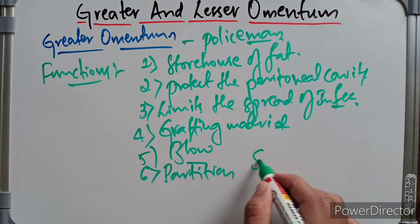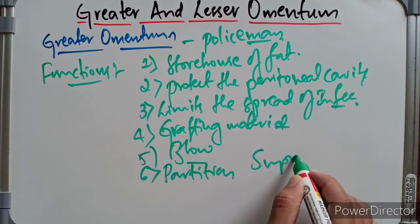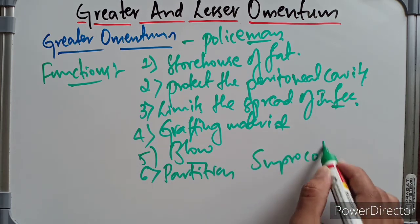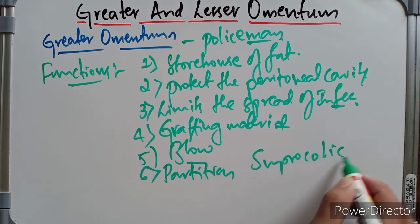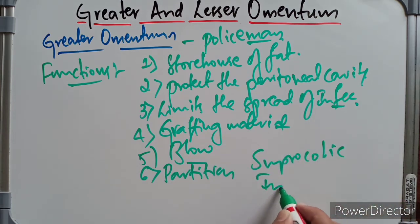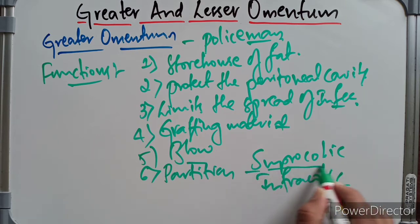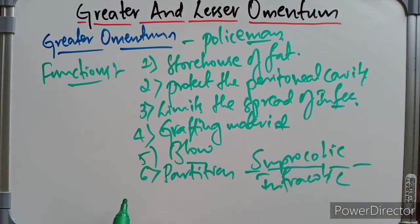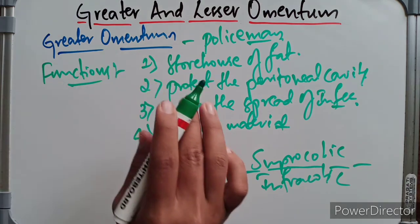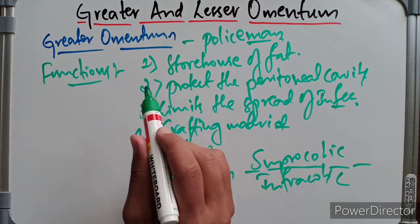Additionally, the greater omentum is sometimes used as a grafting material. It also protects the abdominal viscera from blows to the anterior abdominal wall, and it forms a partition between the supracolic and infracolic compartments. These are the general functions of the greater omentum.